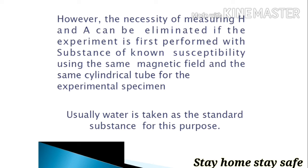You can avoid measuring capital H, that is magnetic field strength, and A if the experiment is first performed with a substance of known susceptibility using the same magnetic field and the same cylindrical tube for the experimental specimen.